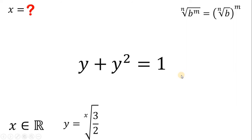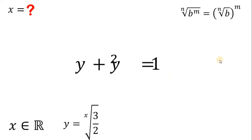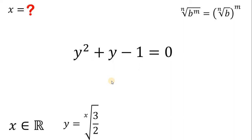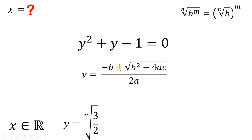Now we have a quadratic equation in terms of y: y plus y squared equals 1. Let's rearrange the terms and equate to 0. We get y squared plus y minus 1 equals 0. Now let's solve for the value of y using the quadratic formula.